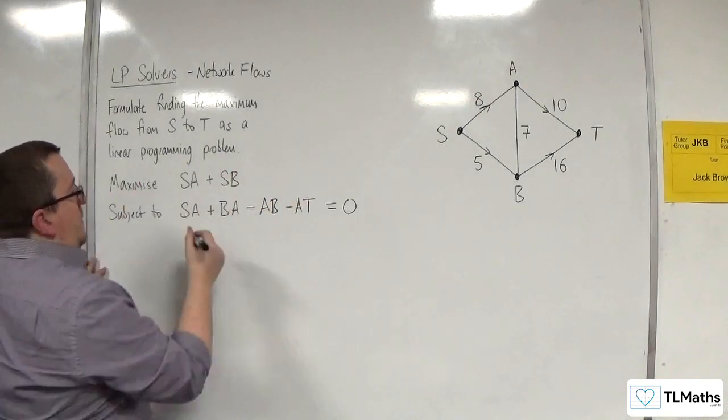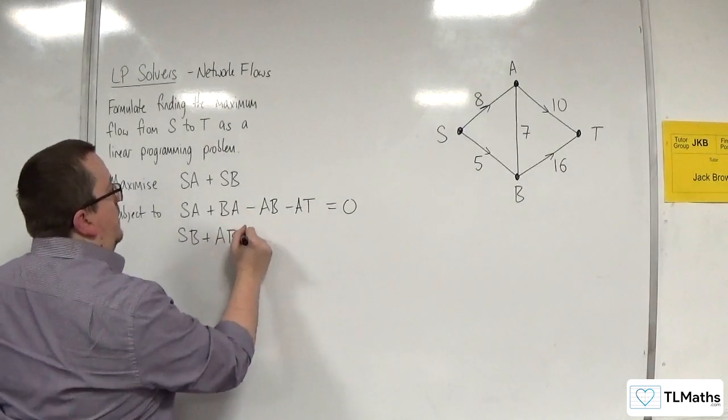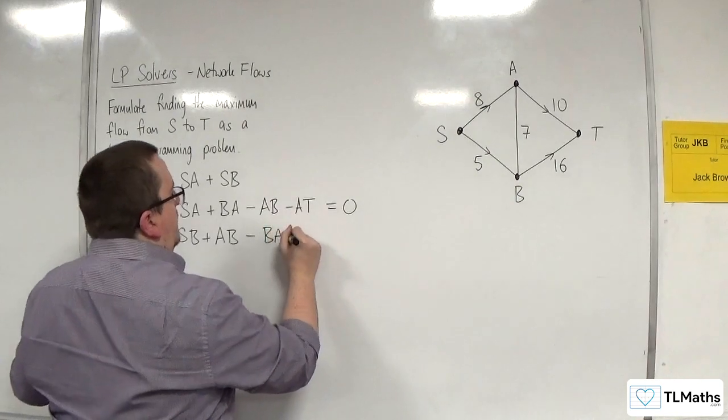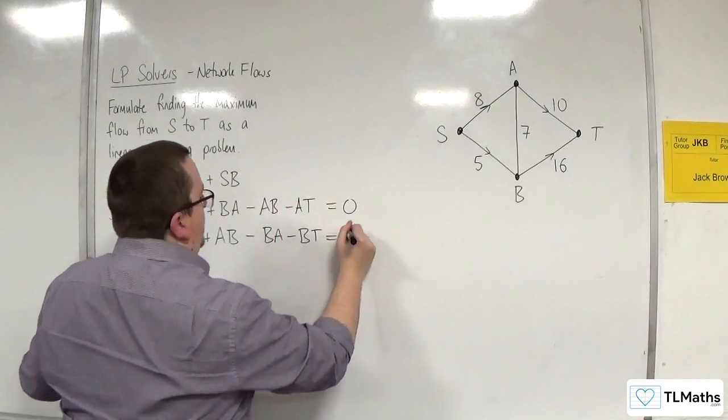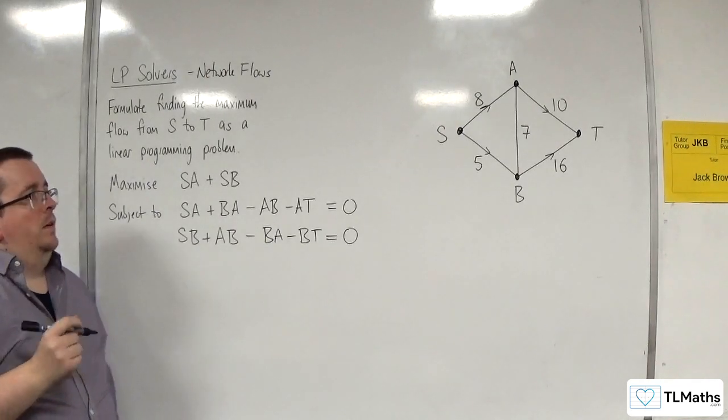Then we want one for B. So S, B plus A, B, those are the flows going in. Take away the flows going out: B, A and B, T. That's got to be equal to 0.